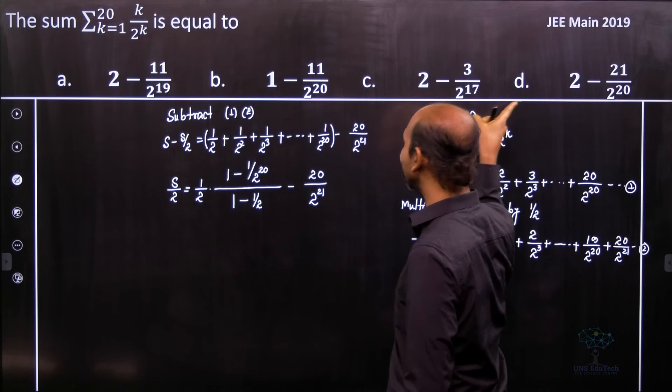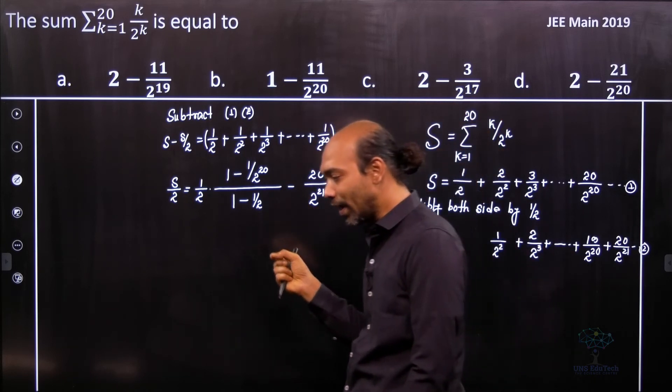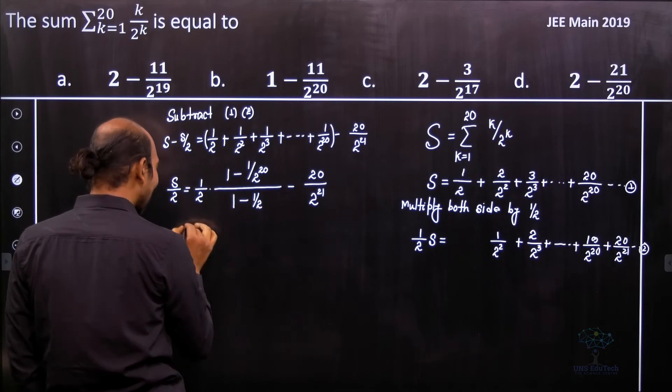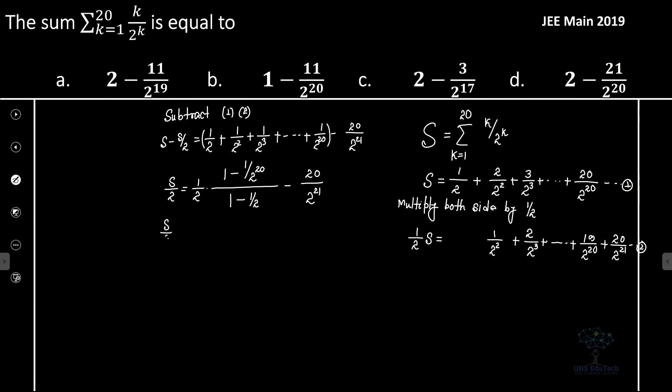Now obviously we have to match them. So that's why we need to calculate it a little bit more. So let's see that this gets cancelled. So obviously s by 2 becomes 1 minus 1 by 2 to the power 20 minus 20 divided by 2 to the power 21.